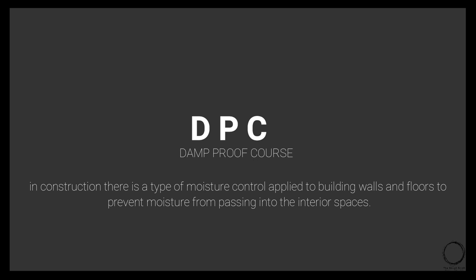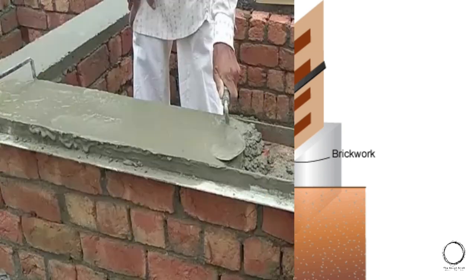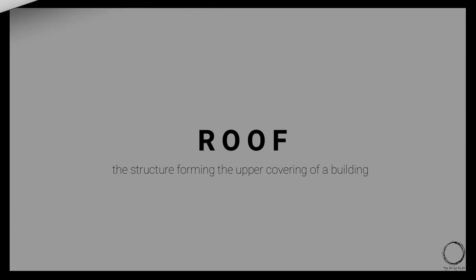The next term is DPC — Damp Proof Course — which is a type of moisture control applied to building walls and floors to prevent moisture from passing into interior spaces. A diagram shows brick work with the damp proof course laid between courses of bricks to control moisture penetration, and an on-site image demonstrates how DPC is carried out.